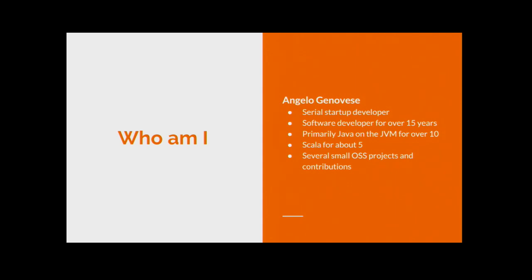My name is Angelo Genovese. I'm a software developer working almost entirely in startups over the course of my career — over 15 years now. Mostly on the JVM. I've done a lot of Scala in the last five years or so, and I'm also the author of a couple of small open source projects.